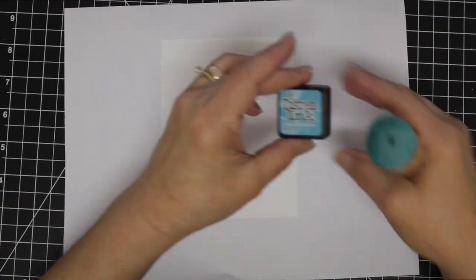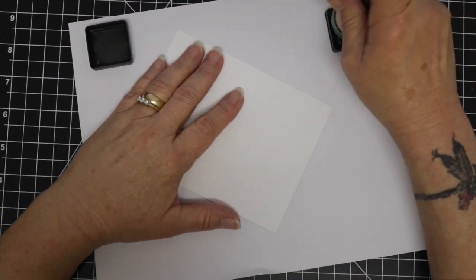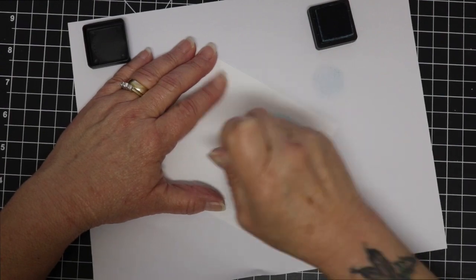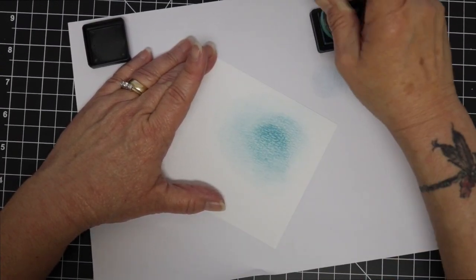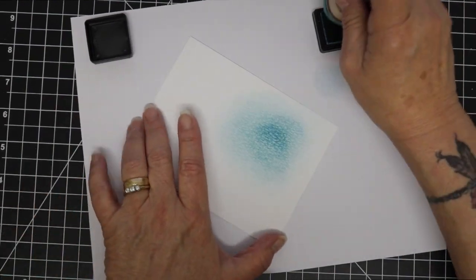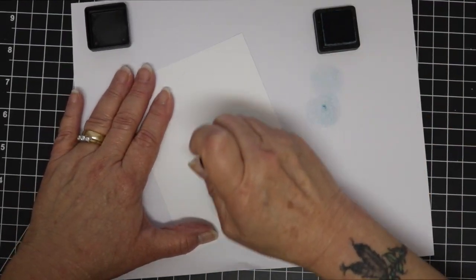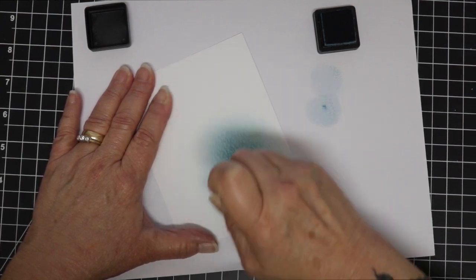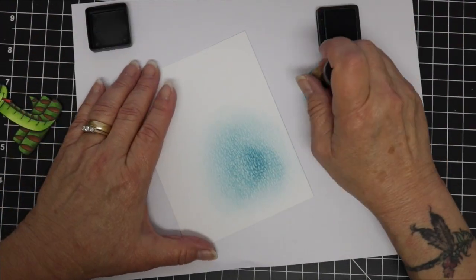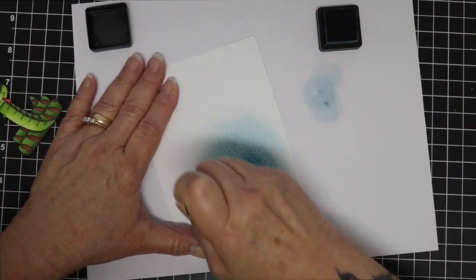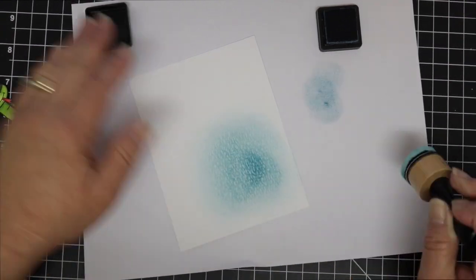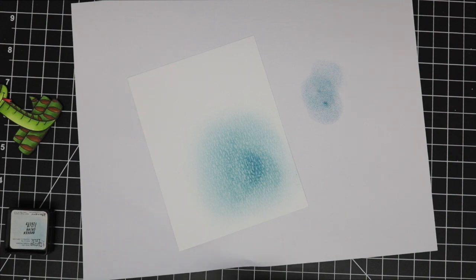And then I'll fussy cut him out and load his backside with some foam tape and now I'm just taking a piece of Ranger watercolor paper here. I'm using the textured side and I decided to use the textured side since my image was kind of flat if you will. I didn't do any dot detail or anything like that on the snake.